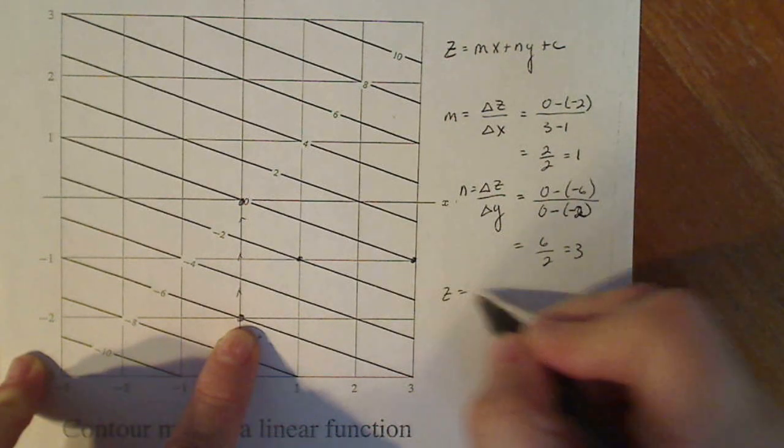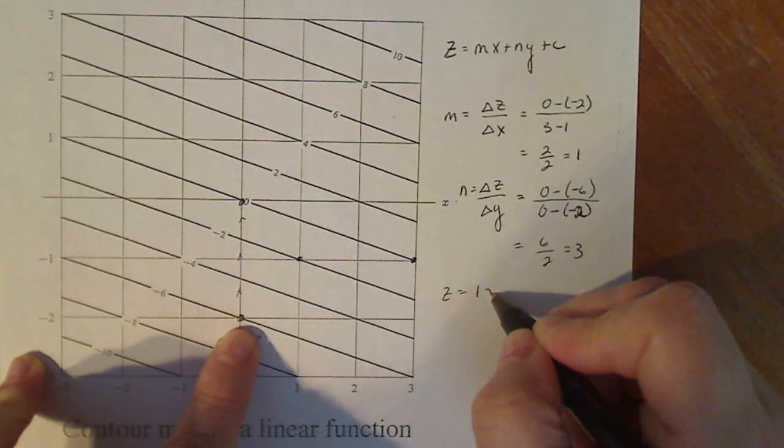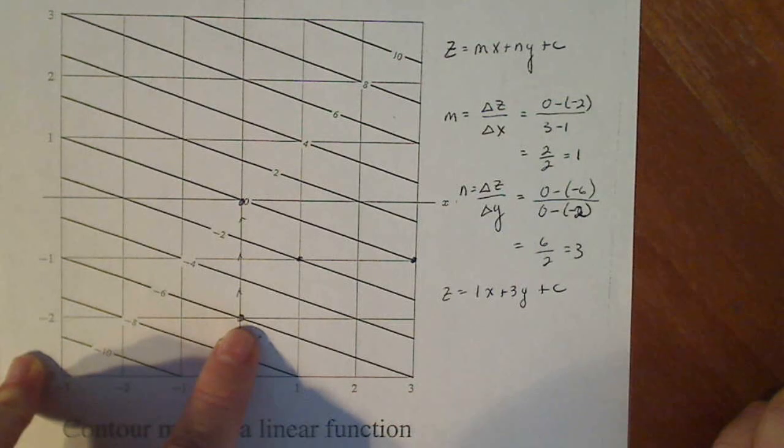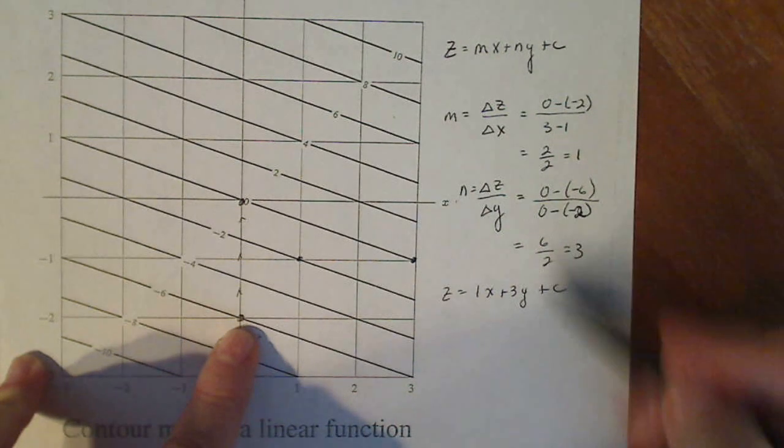So now so far my equation is Z equals one X plus three Y plus C. Now many students are saying, why did you put the one in front of the X? Well, you don't need to. It's just for emphasis to show you where the numbers go.